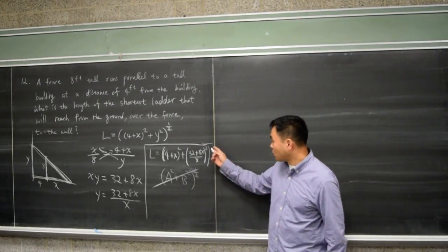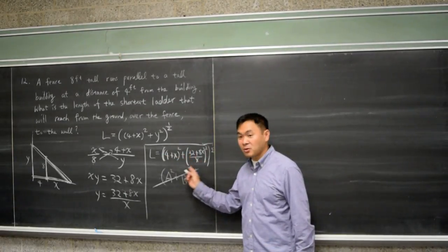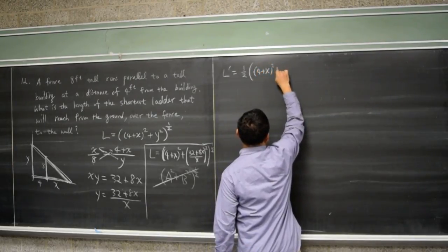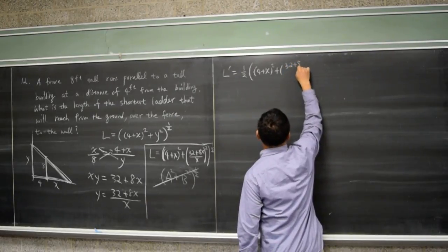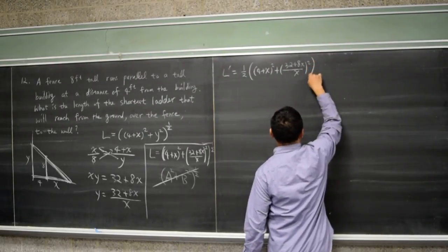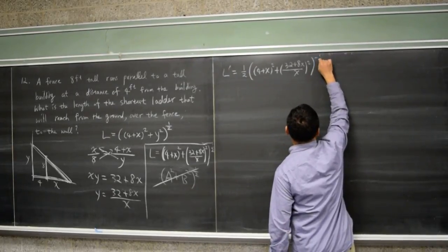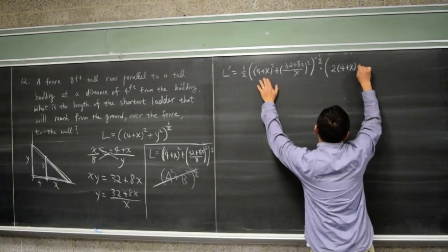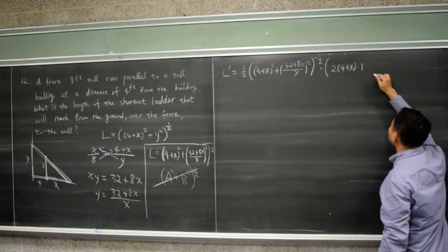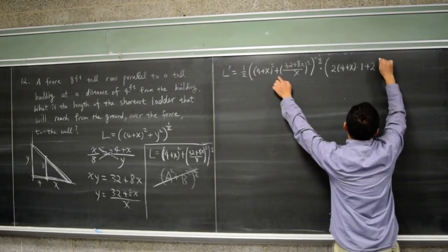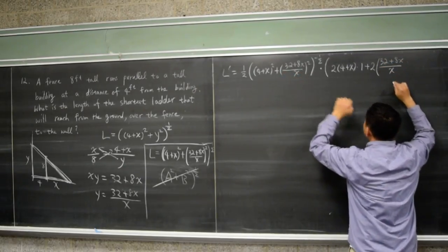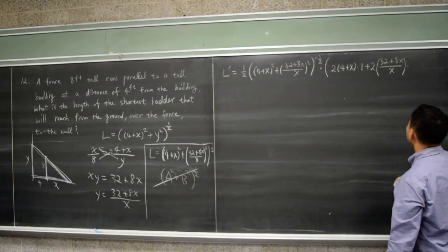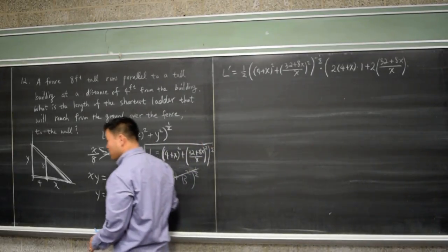This requires a bunch of chain rules, because we have a one-half power outside with a function inside. So L′ = (1/2) · [(4 + x)² + (32 + 8x)/x]^(−1/2) times the derivative of the inside. That derivative is 2(4 + x)(1) using the chain rule, plus 2 · (32 + 8x)/x times the derivative of (32 + 8x)/x. Since that inner derivative is a bit complicated, let's work it out separately.